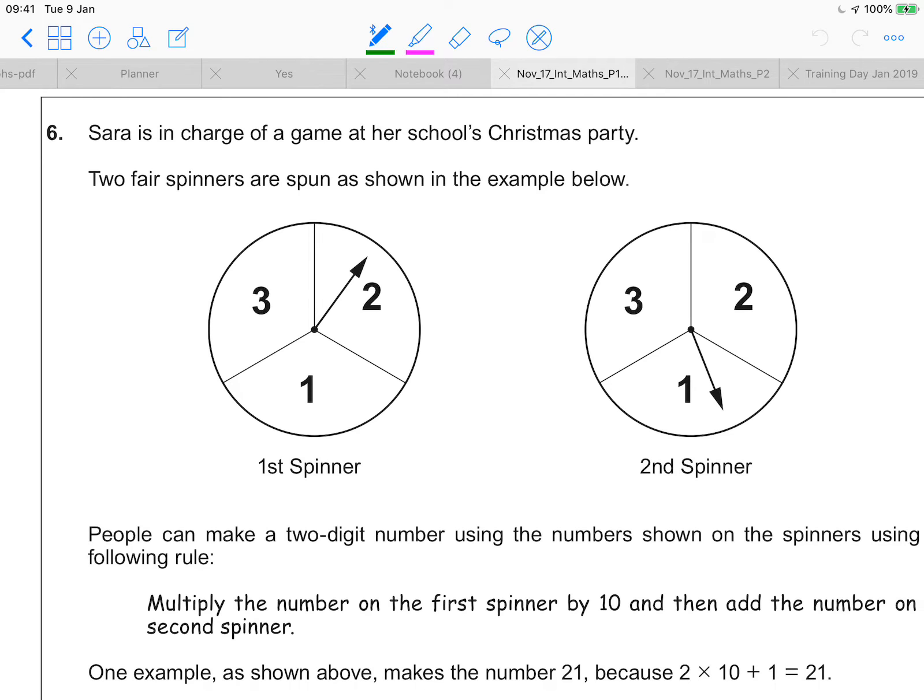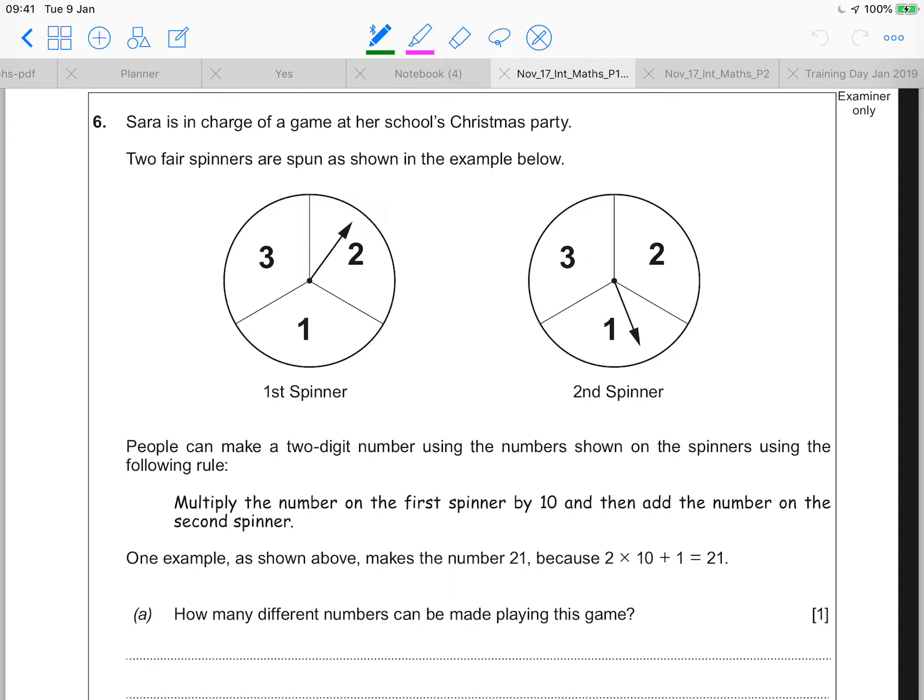Question six. Sarah is in charge of a game at her school's Christmas party. Two fair spinners are spun as shown in the example. So in this example, the spinners landed on a two and on a one. And as shown above, this makes 21. Because we're going to have two tens. This one gets multiplied by 10. And then we're going to add one. So then we just add this one on. So times our first one by 10. And add the second one on. It says this clearly underneath. But you have to read through the information or it looks more complicated than it is.